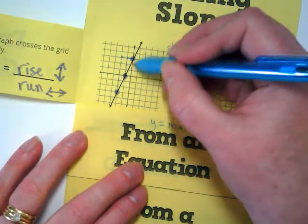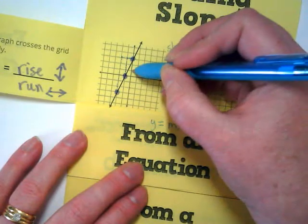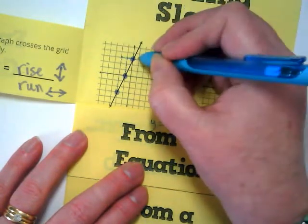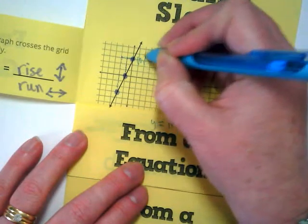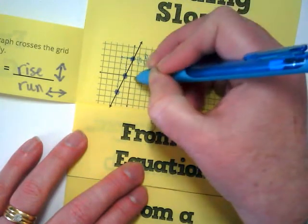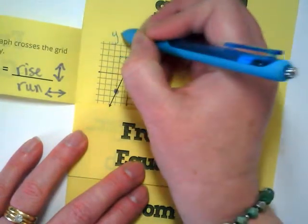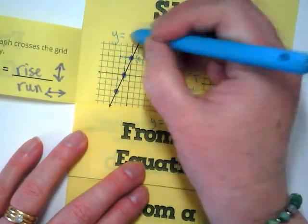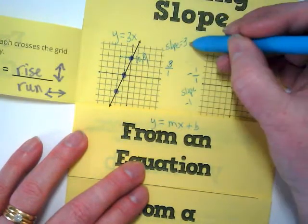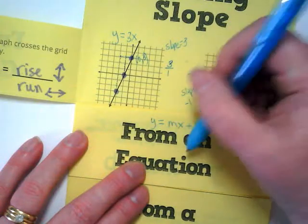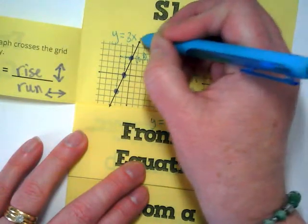So when I look at this one, where is this one crossing the y-axis? Three. It's point would be called zero comma three. Because I didn't go left or right, I just went up three, yes? So the equation for this line is y is equal to 3x, because what's our slope? Three. And so we're going to put that three in where the m goes, plus three.